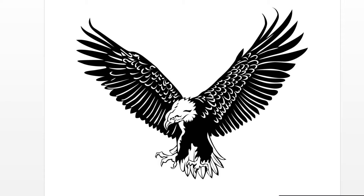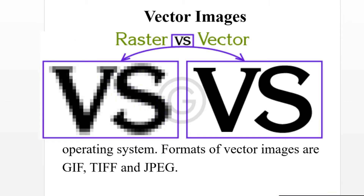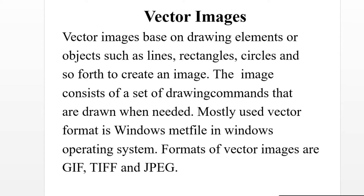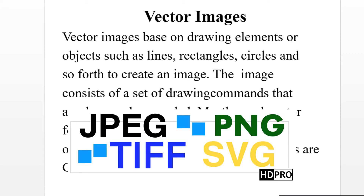Vector images are based on drawing elements or objects such as lines, rectangles, and circles used to create an image. The image consists of a set of drawing commands that are drawn when needed. The most commonly used vector format is the Windows Metafile in Windows operating system. Formats of vector images include GIF, TIFF and JPEG.